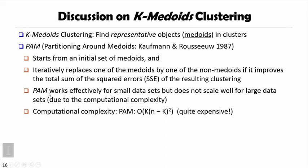PAM works effectively for small datasets because we can keep trying different swaps, but it does not scale well because the computational complexity is quite high. In detail, the computational complexity for every swapping is on the order of the square of the number of points, which is quite expensive.